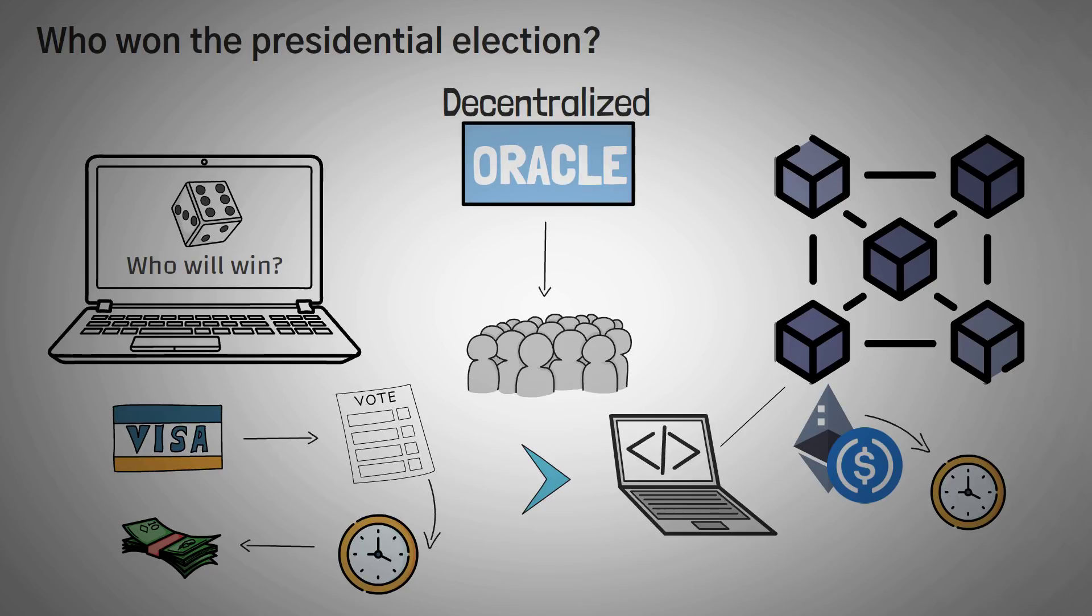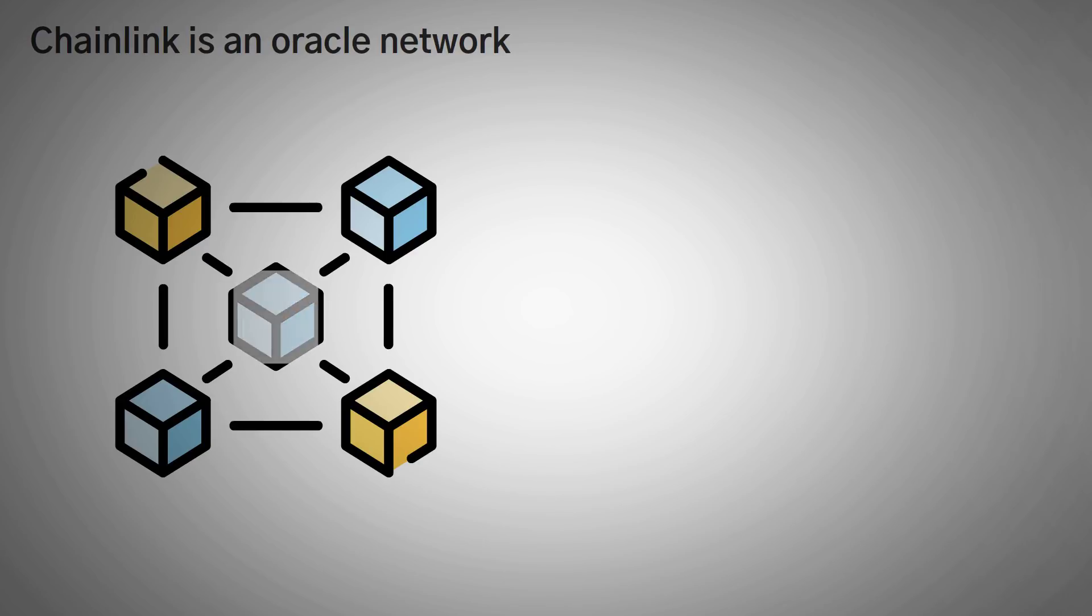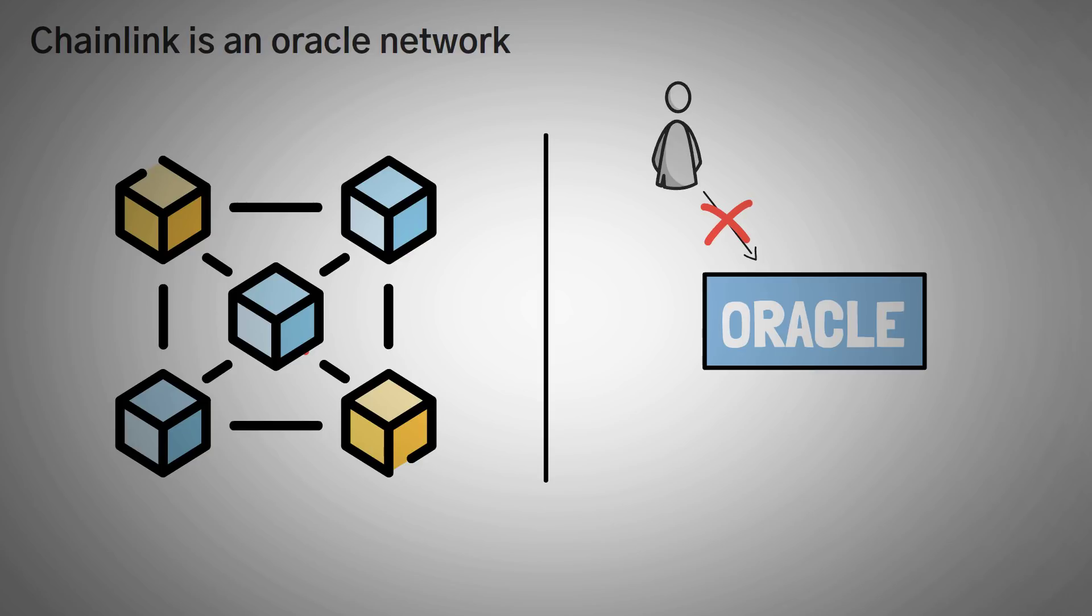Speaking of decentralized oracles, one of the benefits is that we don't have to trust one data source, right? Well, this wouldn't be a video about oracles if we didn't talk about Chainlink. Basically, blockchains are decentralized, meaning no one person or no one company can actually control them. Oracles should be too, meaning that you don't get data from just one source, because if you did, you would have one point of failure, and then your data is technically centralized. So how do we make an oracle decentralized?